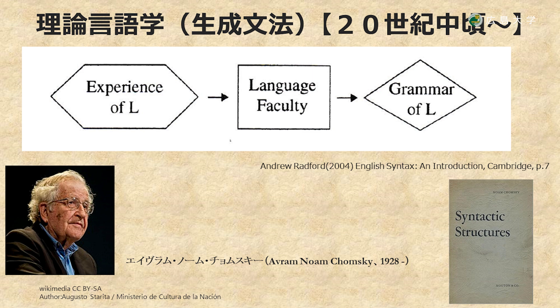構造主義言語学に続いて言語学の主流となるのが生成文法と呼ばれる理論言語学です。生成文法は『文法の構造（Syntactic Structures）』という本を出版したノーム・チョムスキーに始まります。チョムスキーの基本的な言語に対する考え方は、幼児期に触れる言語が何語であるにもかかわらず驚くほどの短期間に子どもは言語獲得に成功しますが、これは言語の初期状態である普遍文法を生まれながらにして持って生まれるためであると考えます。